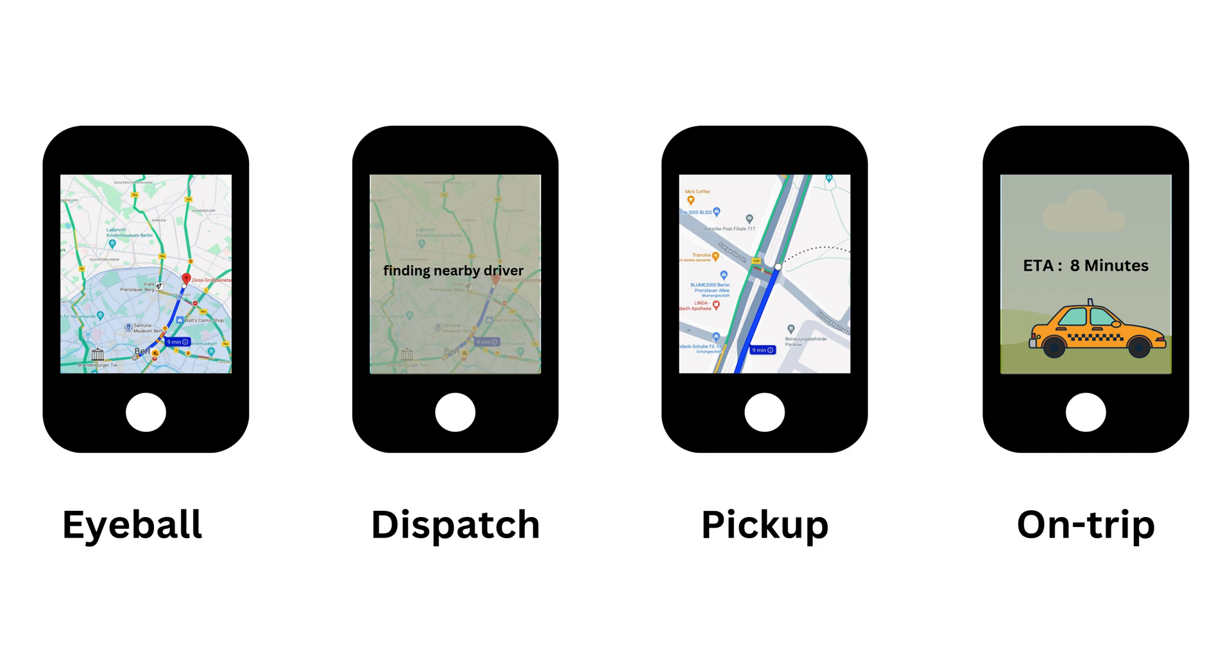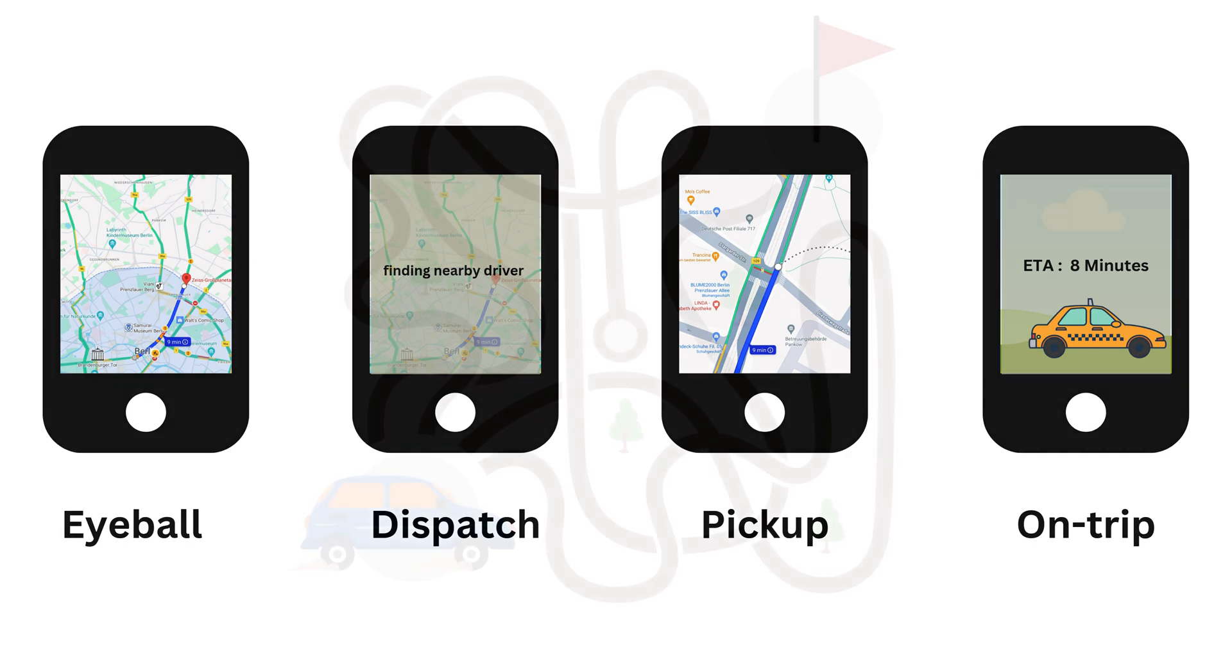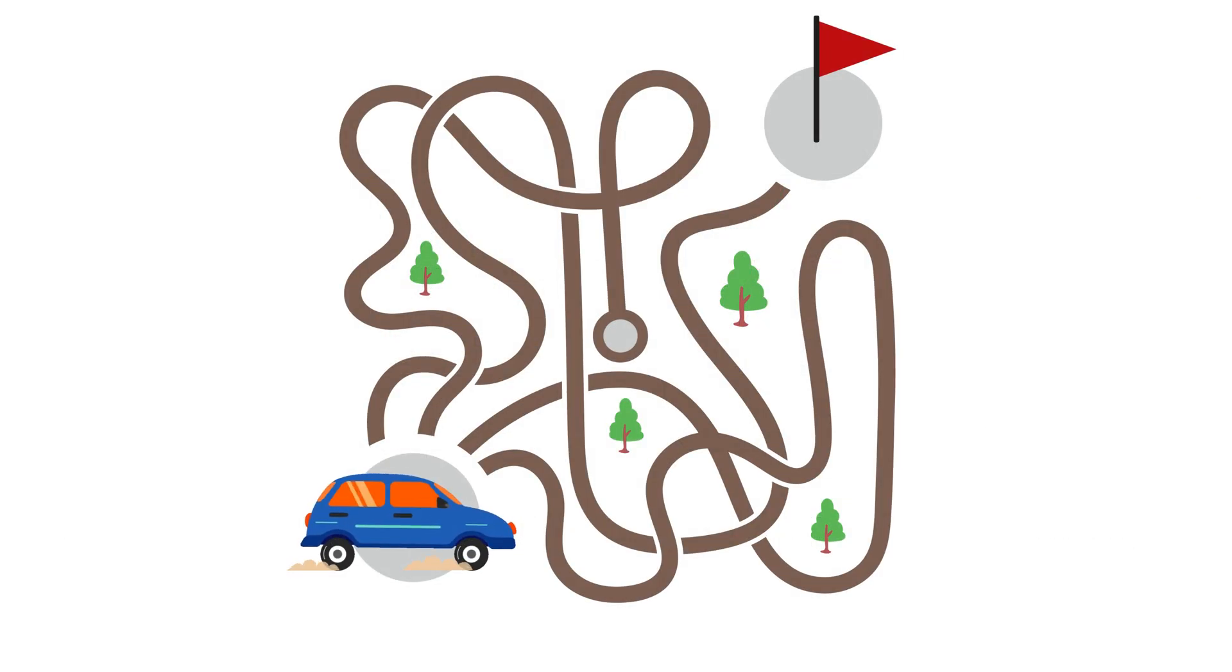Yet, computing ETA is a difficult problem because the distance between the source and destination is not a straight line. Instead, it consists of complex street networks and highways. The smart engineers at Uber use simple ideas to solve this difficult problem. Here's how Uber computes ETA accurately at extreme scales.